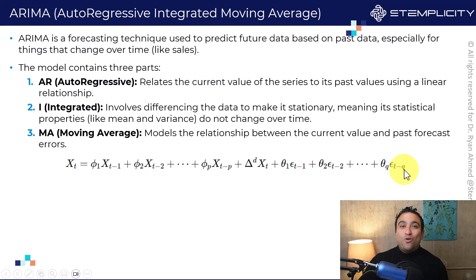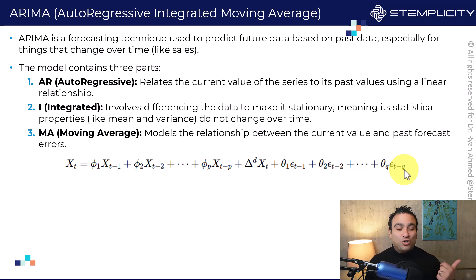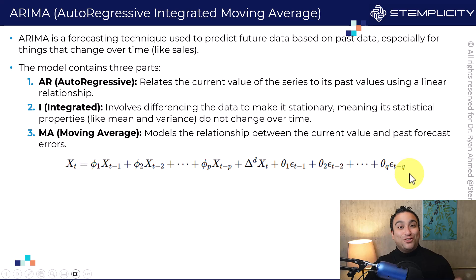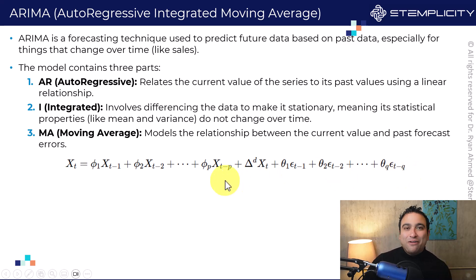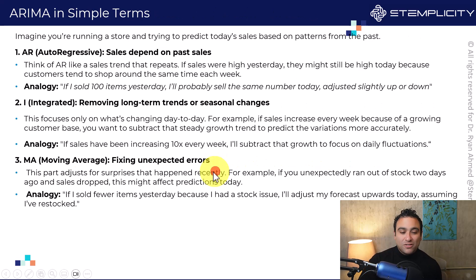The big question is: what should be the value of p, d, and q? That's the idea of hyperparameter tuning and optimization. By playing around with these values, I'm going to be able to optimize the model performance.